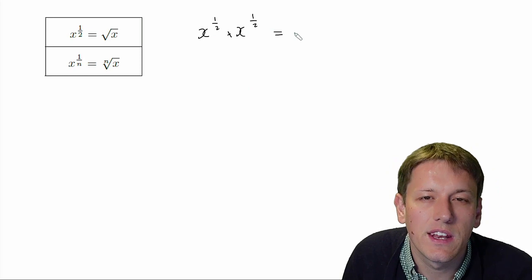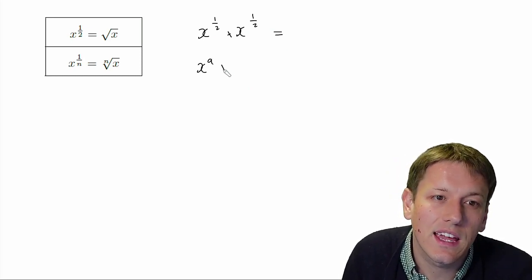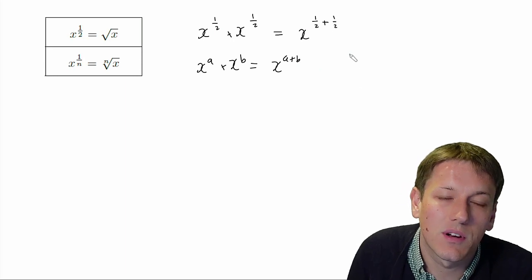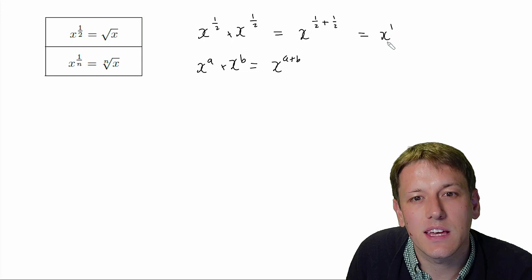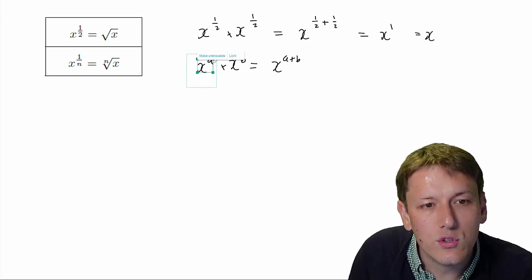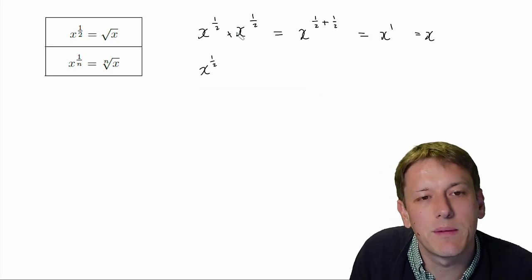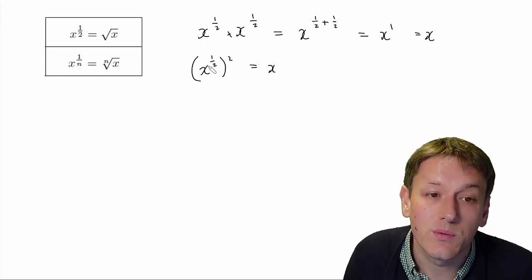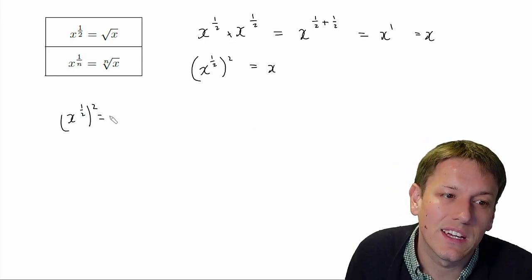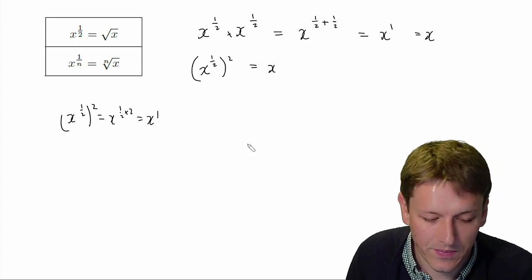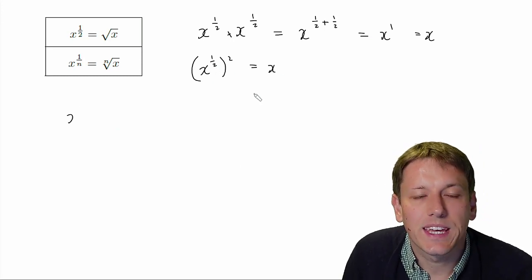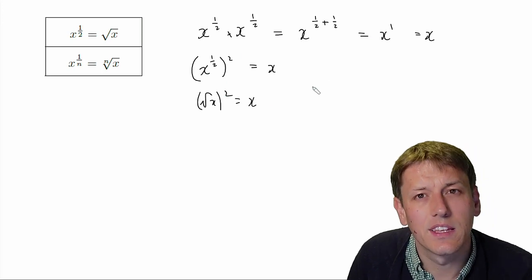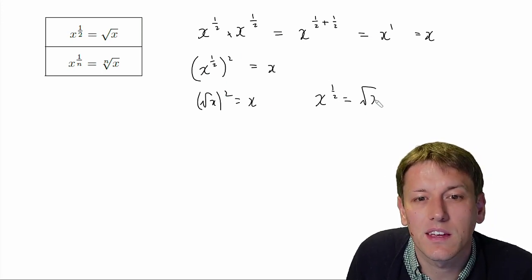So X to the one half times X to the one half. By the rule of addition for indices — X to the A times X to the B is X to the A plus B — this should equal X to the one half plus one half. One half plus one half is one, so this is X to the one, which is just X. So this number X to the one half, when I multiply it by itself — when I square it — I get X. We could also use the power rule: X to the one half squared is X to the one half times 2, which is also X to the one. So X to the half is a number that when squared gives X — and that's exactly the definition of the square root of X.